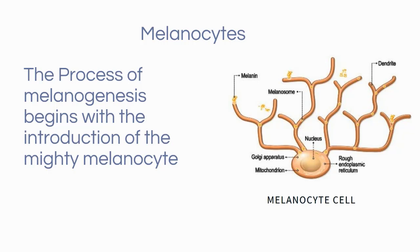The process of melanogenesis, which is the production of melanin pigment, begins with the introduction of the mighty melanocyte. Resembling an octopus, the melanocyte is found in the stratum germinativum of the epidermis. There is approximately one melanocyte to every ten keratinocytes along the dermal-epidermal junction.